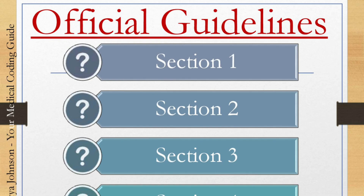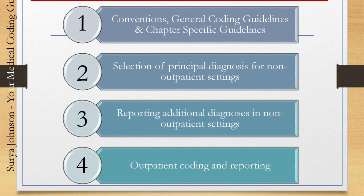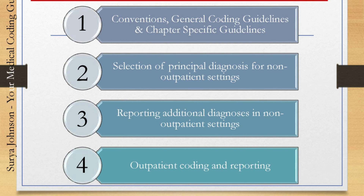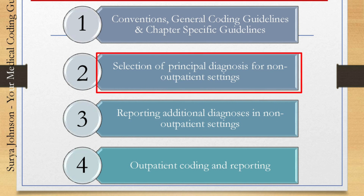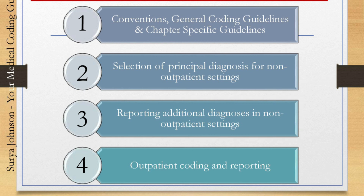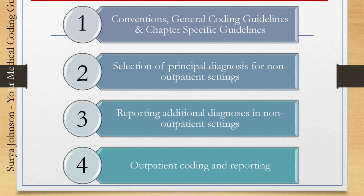These guidelines are organized into sections: Section 1, Section 2, Section 3, and Section 4. Section 1 explains the conventions, general coding guidelines, and chapter-specific guidelines. Section 2 is about selection of principal diagnosis for non-outpatient settings. Section 3 explains reporting additional diagnosis in non-outpatient settings. Section 4 is outpatient coding and reporting.